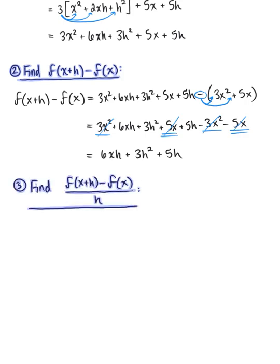We have the difference of the y values f of x plus h minus f of x, and we're dividing by h. Taking what we found in step two, we are now ready to divide this all by h. To help prevent any algebra errors, let's factor for our safety.